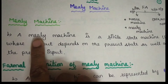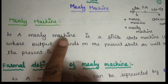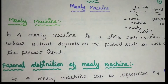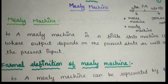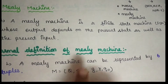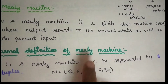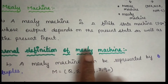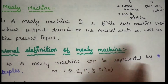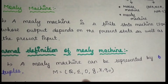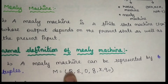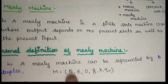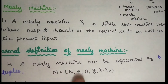We are talking about the Mealy machine. This is a theoretical Mealy machine and it is defined as a six-tuple consisting of Q, Sigma, O, and transition function X.